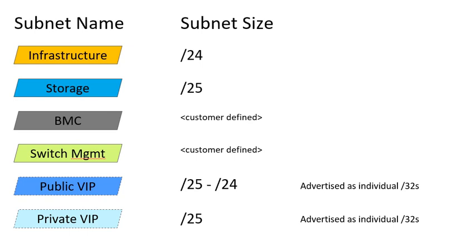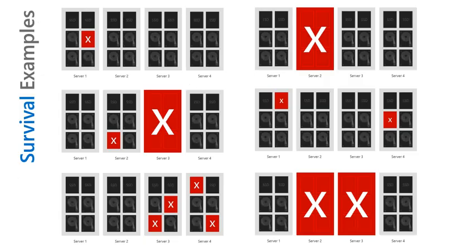Some of the survival examples look something like this — servers and protection against failing, and issues that might occur, and the IPs and the scenarios.